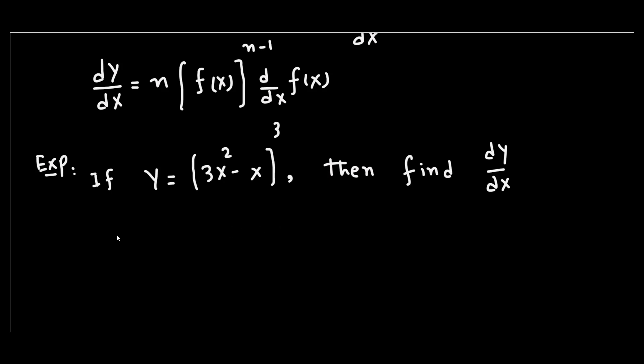the generalized power rule can be applied as dy/dx. This equals, according to the formula, the power multiplied with the coefficient. The coefficient is 1, so we have (3x² - x) with the whole power reduced by 1, multiplied by the derivative of the function inside the brackets,